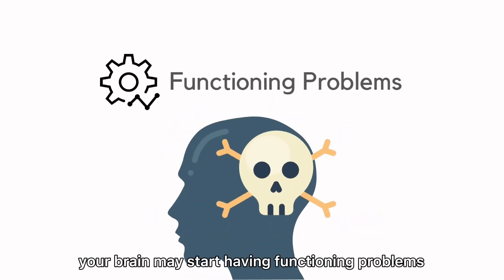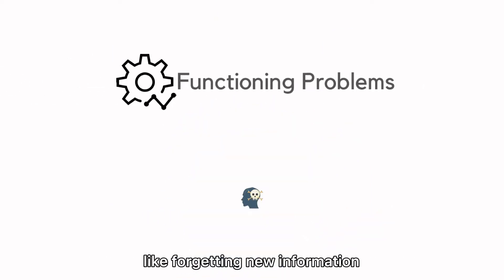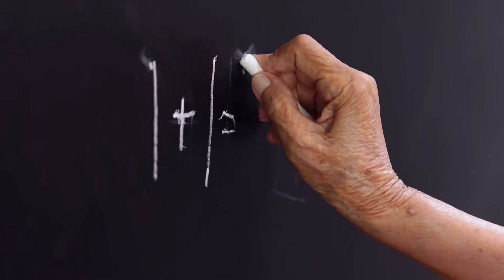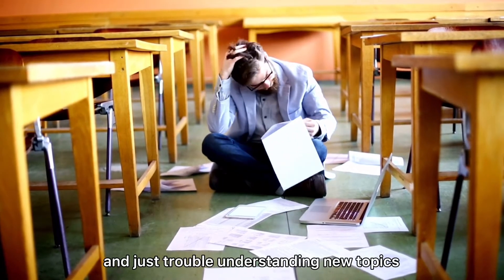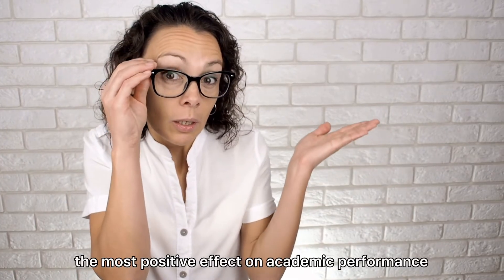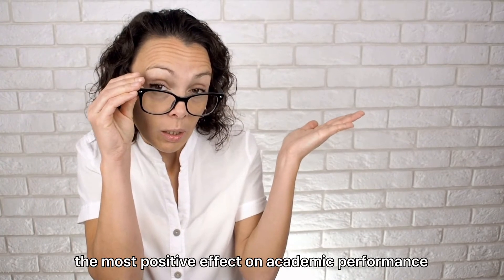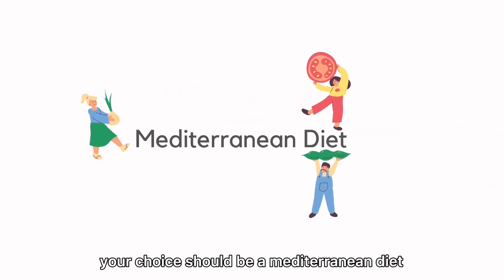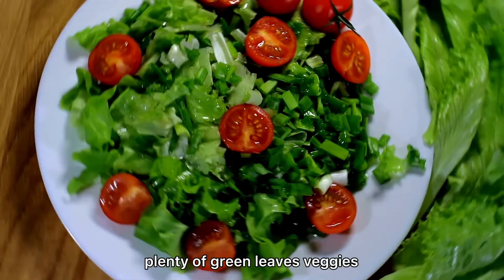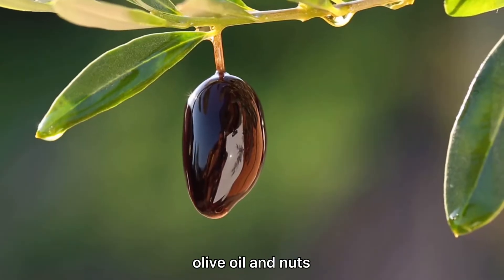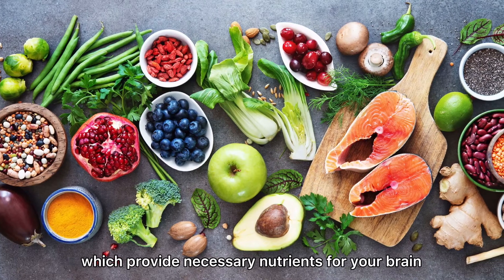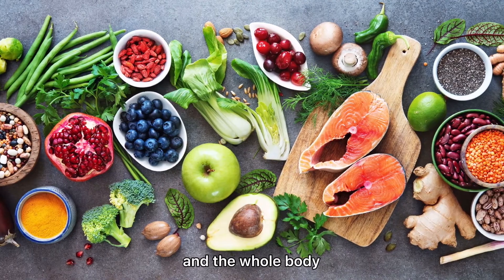In other words, your brain may start having functioning problems like forgetting new information and just trouble understanding new topics. Wondering what kind of diet has the most positive effect on academic performance? Your choice should be a Mediterranean diet with plenty of green leaves, veggies, olive oil, and nuts which provide necessary nutrients for your brain and the whole body. But also quit drinking.